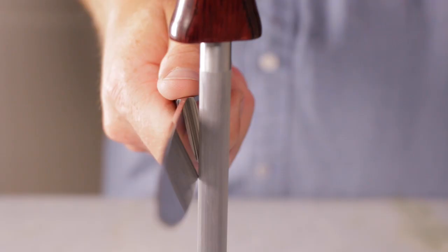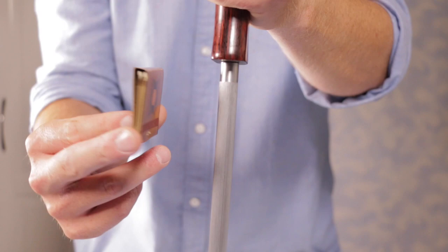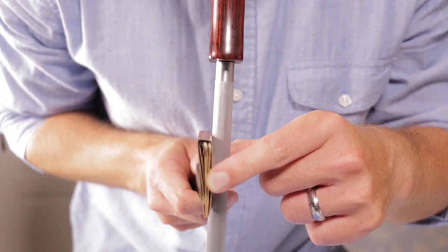Hold the edge of the knife to the steel at roughly a 15 to 20 degree angle. To help you find that angle, picture a matchbook being held between the blade and the steel.